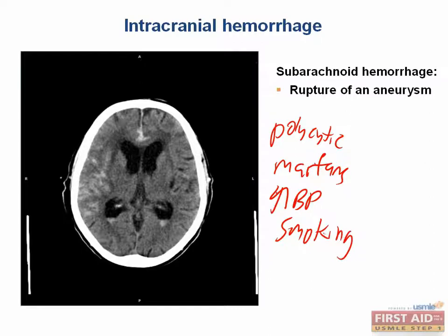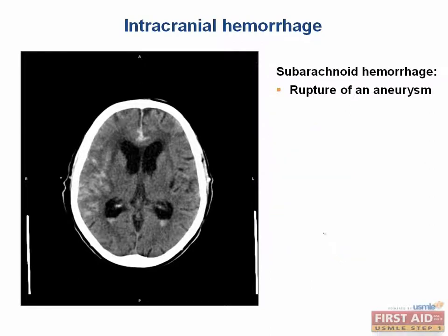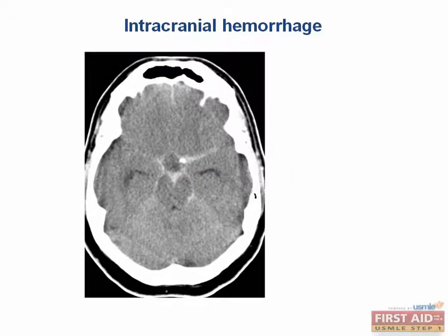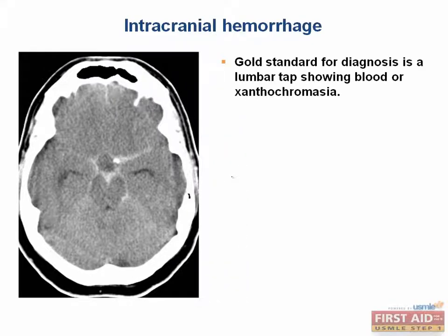The classic chief complaint of a patient with a subarachnoid hemorrhage is the worst headache of my life. You should particularly worry when it's of sudden onset — they usually can remember exactly when it started. They may also have meningeal signs like nuchal rigidity or photophobia. On CT, you may be able to appreciate hyperdense blood. This image shows blood filling the star-shaped suprasellar cisterna. The most accurate way to diagnose a subarachnoid hemorrhage is with a lumbar puncture.